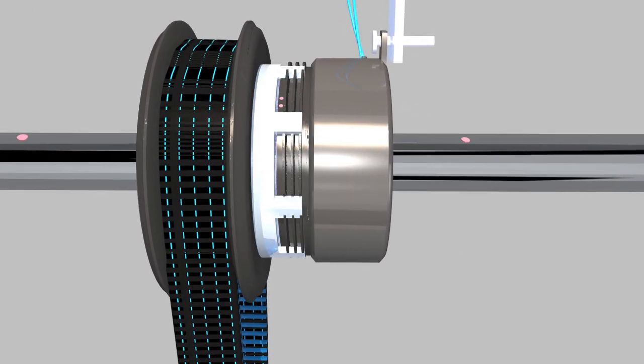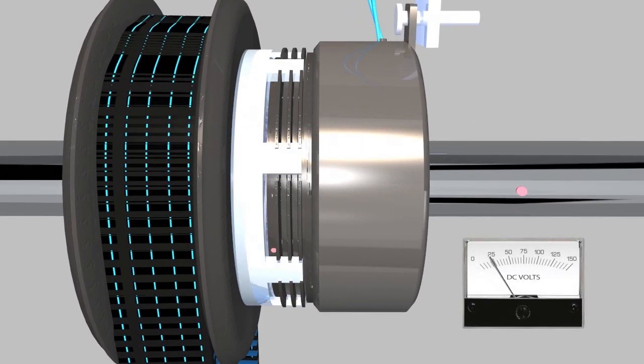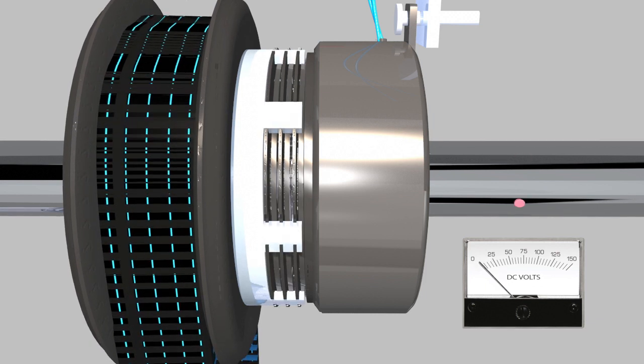To disengage the clutch, current voltage is removed and the separator wave springs prevent the inner and outer discs from making contact. But there is still a minimal amount of drag present from the separator springs.